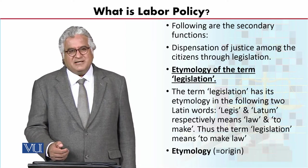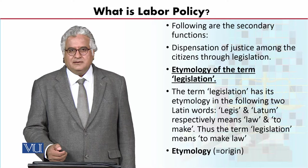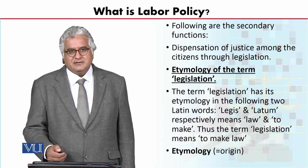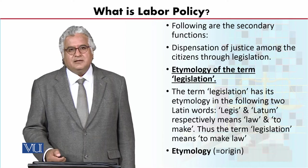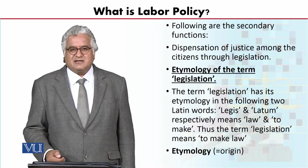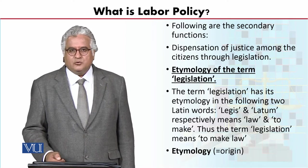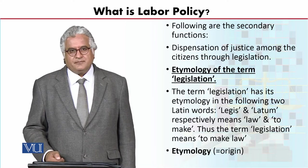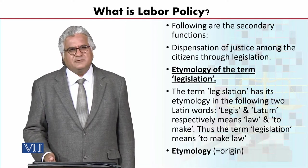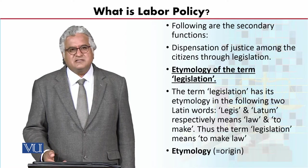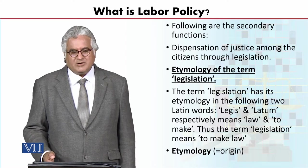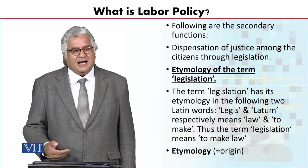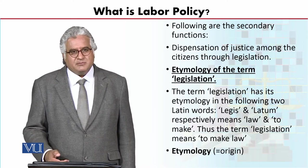जब Parliament law बनाती है या provincial assembly law बनाती है तो वो primary legislation है। Secondary उस वक्त है जब executive को delegate power कर दी जाती है कि वो subordinate legislation करे, तो उसको secondary legislation कहा जाता है। Labor policy is very much related with law — laws बनते हैं, पहले policy है फिर laws बनते हैं, legislature law बनाती है, आम आदमी law नहीं बना सकता।